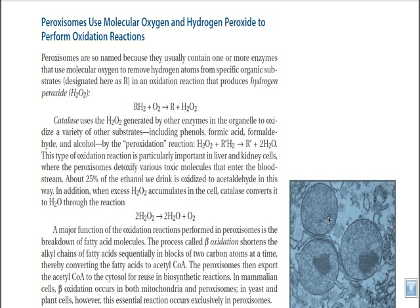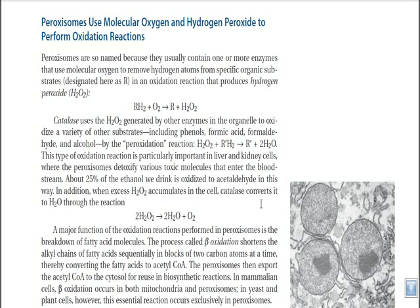That's why special organelles like peroxisomes are designed. In this picture you can see simple sac-like structures in the cell. They contain enzymes that remove the hydrogen attached to organic substances and break those organic substances in such a way that hydrogen peroxide is cleaved and removed, releasing oxygen along with water.